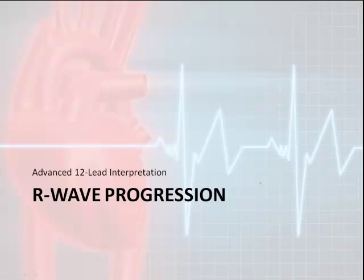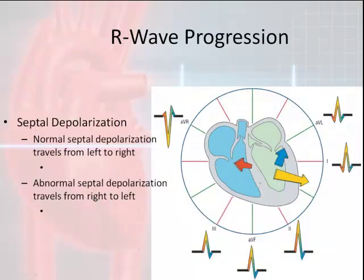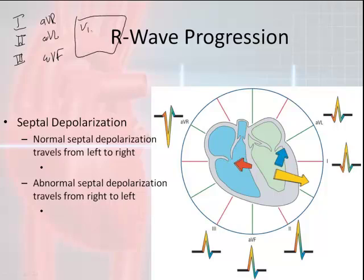Let's first discuss R wave progression. I'm going to talk about R wave progression through the hexaxial leads, then through the precordial leads. By R wave progression, I mean how an EKG is laid out in a horizontal view: you have lead 1, lead 2, lead 3, then AVR, AVL, and AVF. The other six leads are V1 through V6, which we'll get to shortly.